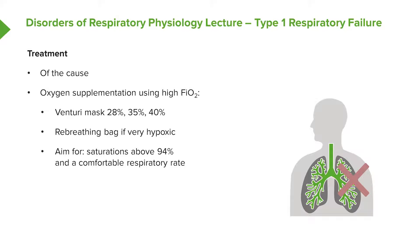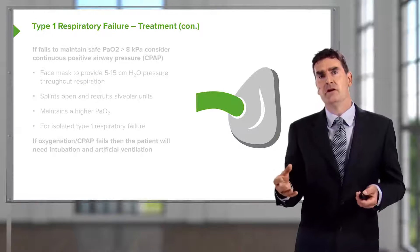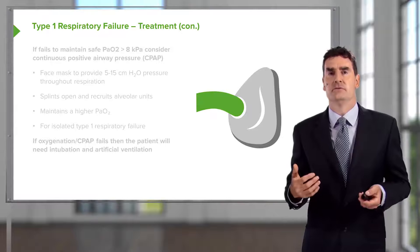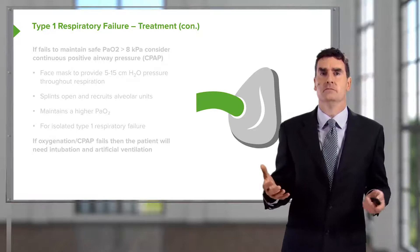Not only that, we'd like the patient to be able to breathe at a comfortable respiratory rate. If they're maintaining a saturation of 95% but breathing at 40 per minute, that is not a good situation — they're struggling very hard. They will tire, and it's quite likely they'll fail to maintain their oxygenation if they have to keep up a respiratory rate of 40 per minute. So what do we do if the patient remains hypoxic or has a very high respiratory rate despite breathing oxygen from a mask or re-breathing bag?